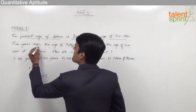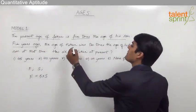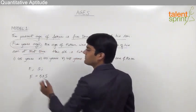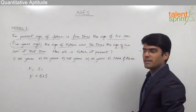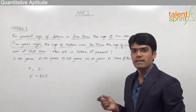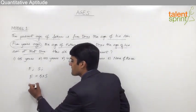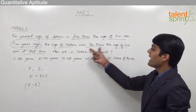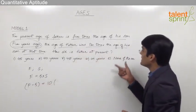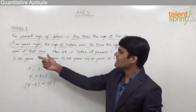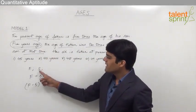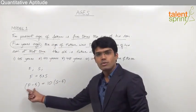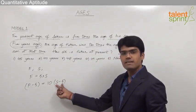The second statement says 5 years ago, the age of father was 10 times the age of his son at that time. If the father's present age is F, his age 5 years ago should be F minus 5. So father's age 5 years ago was F minus 5, and this should be equal to 10 times the age of his son at that time. If the present age of the son is S, his age 5 years ago is S minus 5. So F minus 5 equals 10 times (S minus 5).